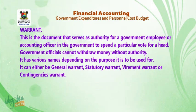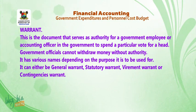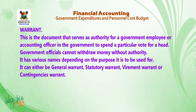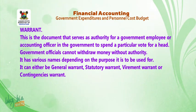Warrant: this is the document that serves as authority for a government employee or accounting officer to spend a particular vote for a head. Government officials cannot withdraw money without authority. It has various names depending on the purpose it is to be used for — it can either be a general warrant, statutory warrant, virement warrant, or contingency warrant.